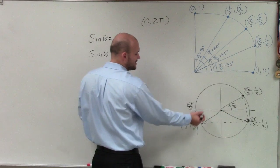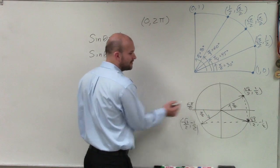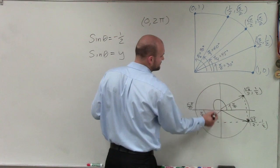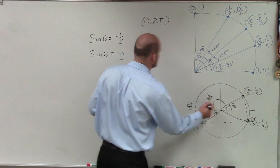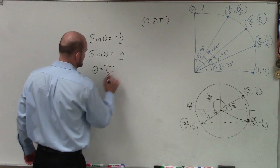And since this is a direct reflection, this is only an extra pi over 6. So therefore, this first angle is going to be 7 pi over 6. So therefore, we can say theta equals 7 pi over 6.